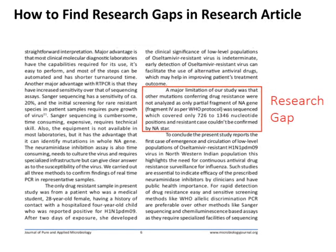How to find research gaps in a research article. You can see a research gap highlighted with a red border in which the authors stated: 'A major limitation of our study was that other mutations conferring drug resistance were not analyzed, as only a partial fragment of the NA gene fragment IV as per WHO protocol was sequenced, which covered only 726 and 1346 nucleotide positions, and resistant cases could not be confirmed by NA star.' An important tip: if you find a research gap in an article, press Control+F and search for words like 'major,' 'limitation,' or 'not analyzed' to find research gaps quickly.